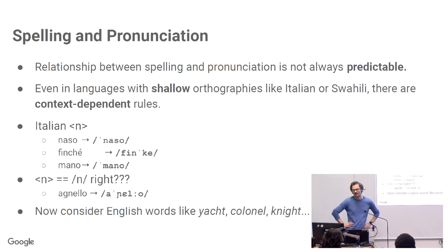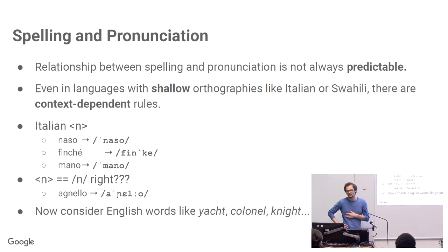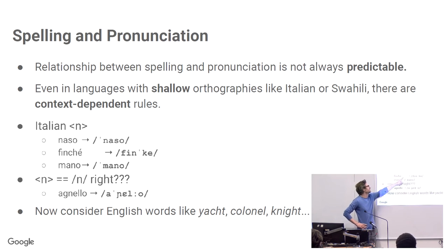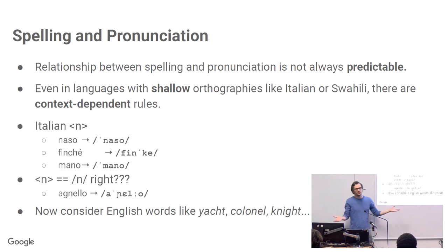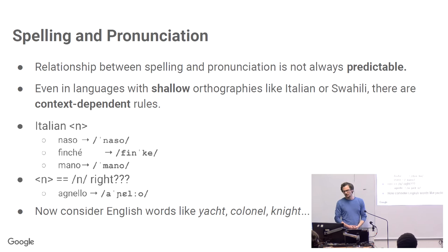The relationship between spelling and pronunciation is not always predictable, even in languages with shallow orthographies. Take Italian: the grapheme N is pronounced N in 'naso', 'finché', and 'mano'. But then you get cases like the digraph GN, where a context-independent mapping of N to N will produce 'agnello' incorrectly — it's actually pronounced with a palatal nasal. Given that simple example with a shallow orthography, think about English words like 'yacht', 'colonel', or 'night'. English is etymological — you have to know about Greek orthography to give pronunciations to English words.